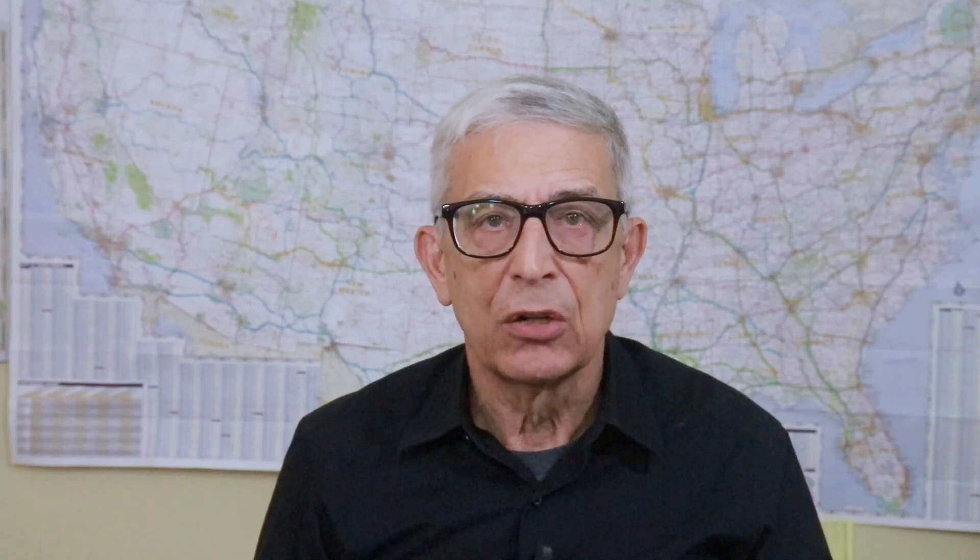Basecamp has another geotagging feature. The program can use the time and location information contained in a track of where you've been and apply a location to a photo based on the time the photo was taken, assuming the camera recorded the time in the photo file.